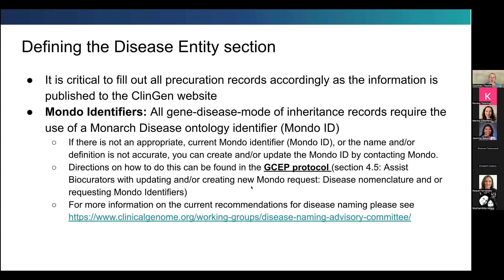If you need more recommendations about using MONDO — especially for updating disease names or definitions — you can look at the Disease Naming Advisory Committee's website, which has all the new guidance published last year. The paper was published on September 5th, so I encourage you to read it. Within SOP version 11, under the defining the disease entity section, you'll get more information, and the GSEP protocol version 2 is about to be published by the end of the week.